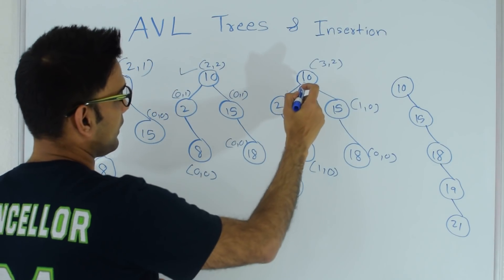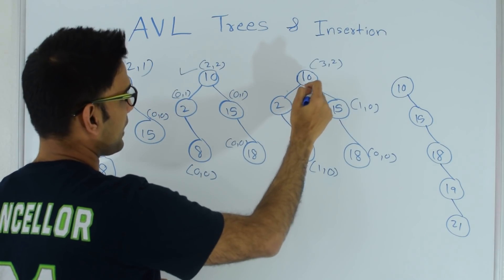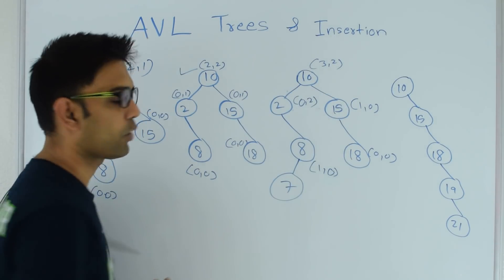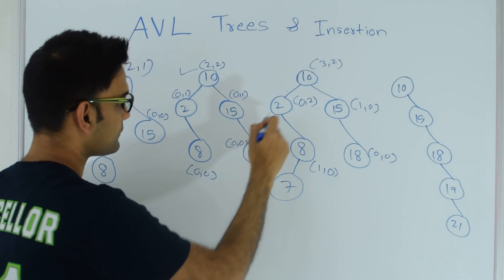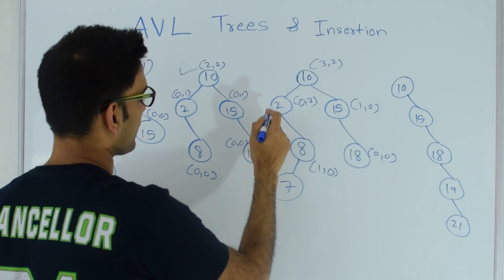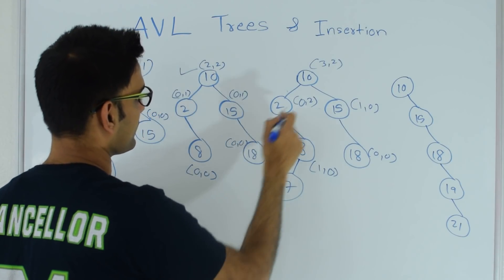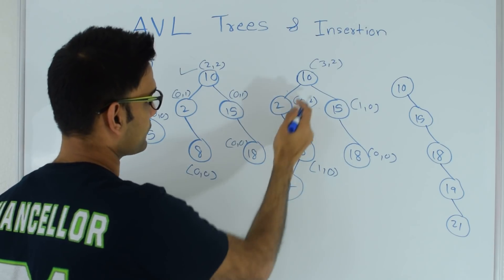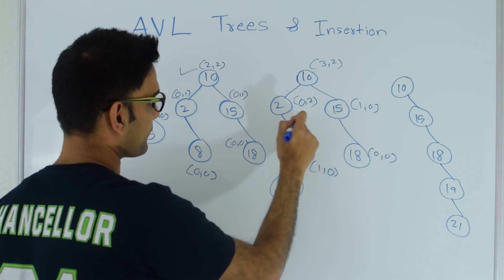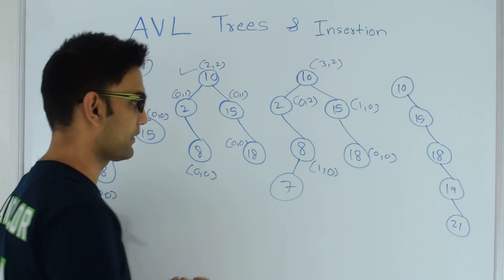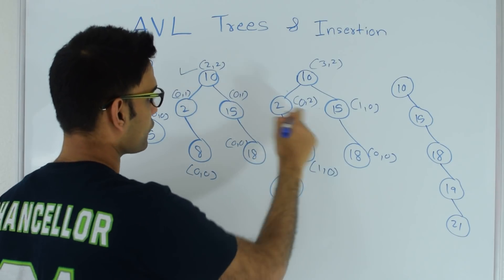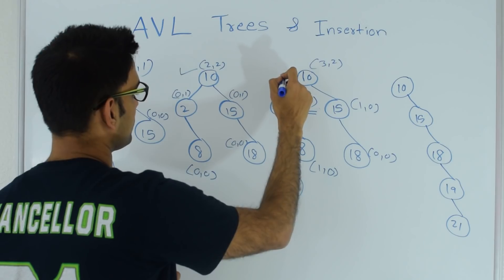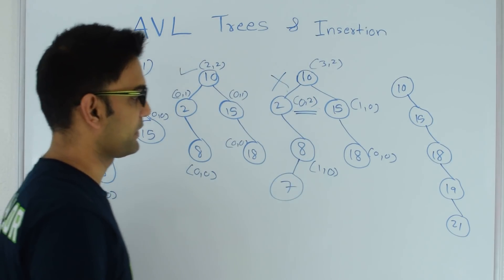Let's look at this tree. For 10, height of the left subtree is 3, height of the right subtree is 2, so 10 does not violate the property of AVL tree. What about 2? For 2, height of the left subtree is 0 because there is nothing on the left side, and height of the right subtree is 2. So the difference of left subtree and right subtree is greater than 1, so 2 violates the property of AVL tree. So this is not an AVL tree.